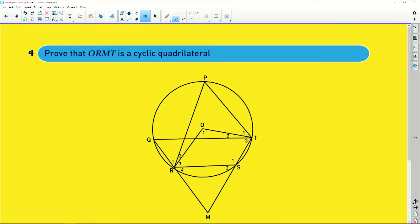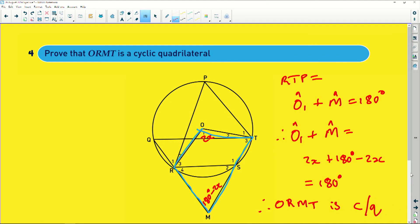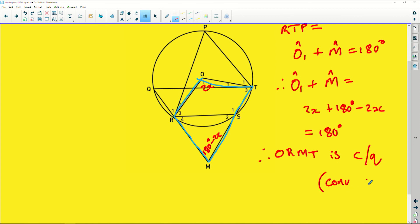Then the last question now, which is the interesting one. I know that this is 2X. I know that this is 180 degrees minus 2X. Then they say to me, prove that ORMT is a cyclic quad. Now, let me highlight what they want me to prove. So, I need to prove that this is a cyclic quad. Now, remember, as I said, there's always an RTP. The RTP in this instance will be, I'm required to prove that O1 plus M is equals to 180 degrees. Therefore, that will mean then I will then say O1 plus M is equals to, remember O1 is 2X plus 180 degrees minus 2X, which will then be equals to 180 degrees. Therefore, O, R, M, T is a cyclic quad. My reason will be converse of supplementary angles.